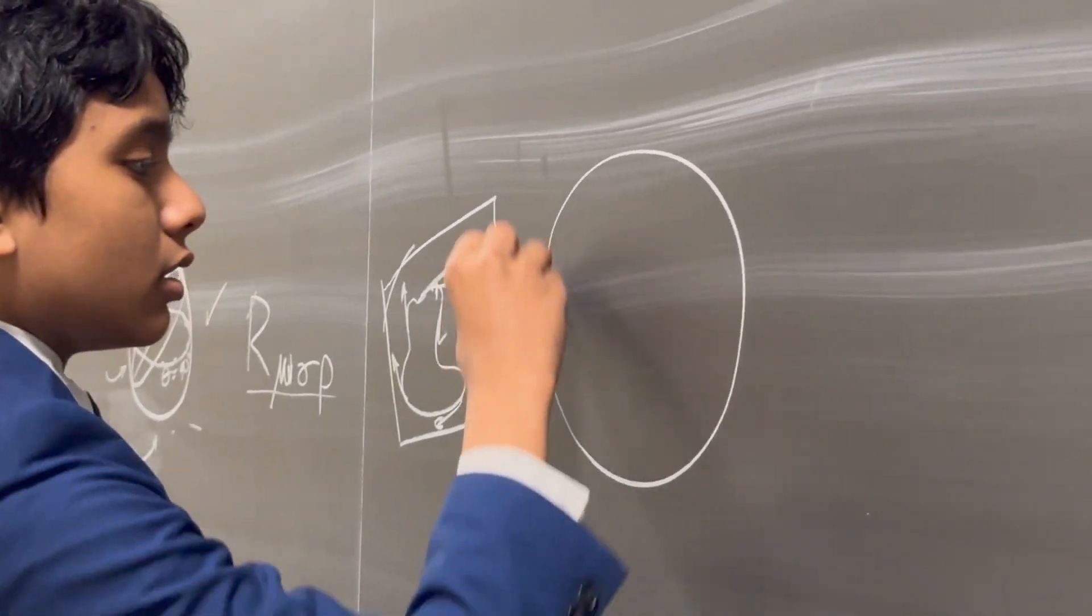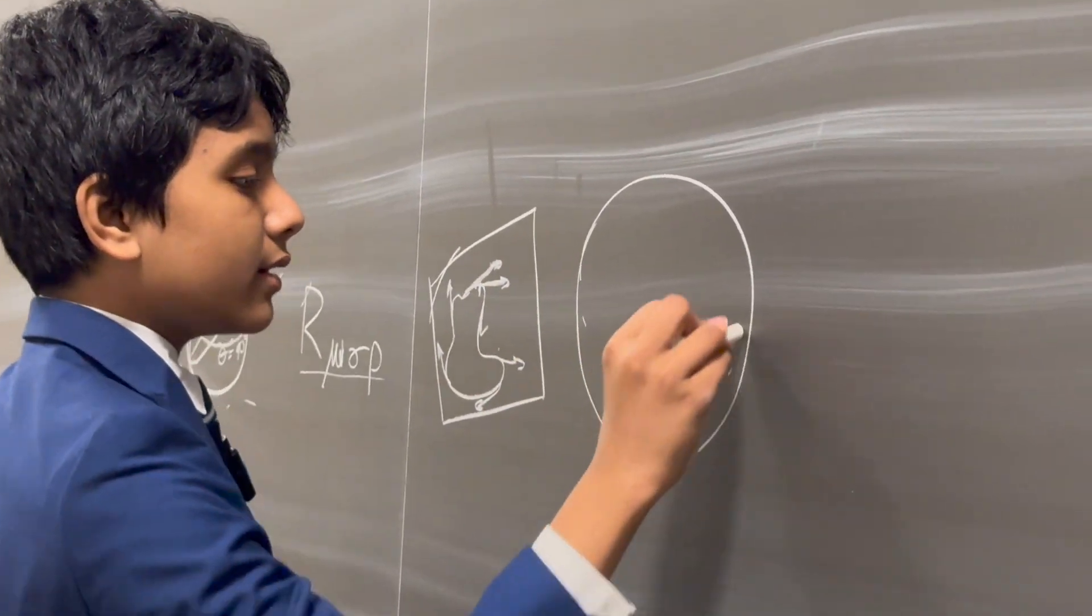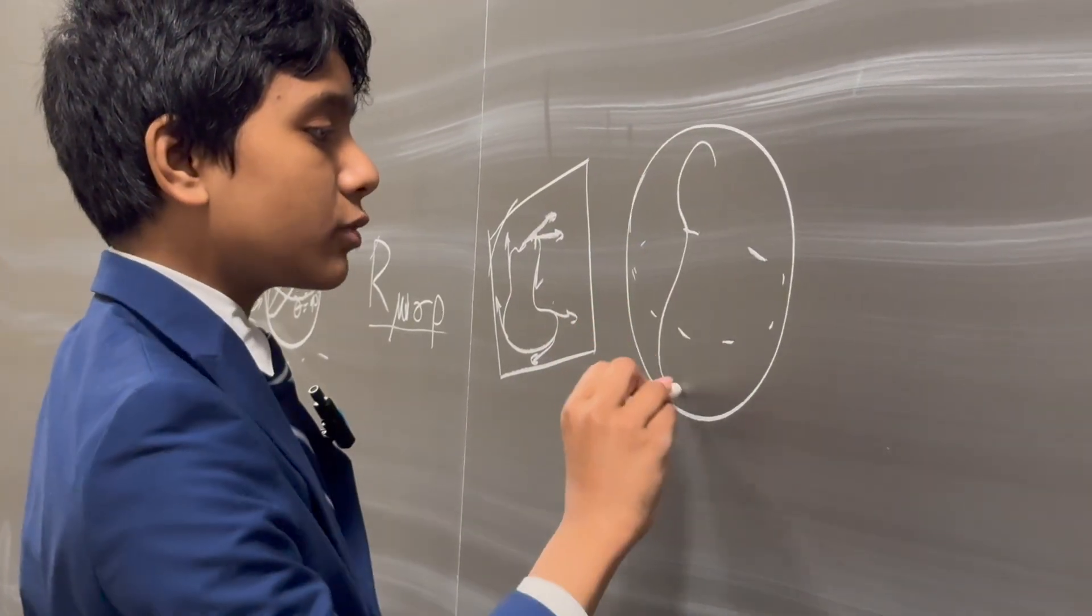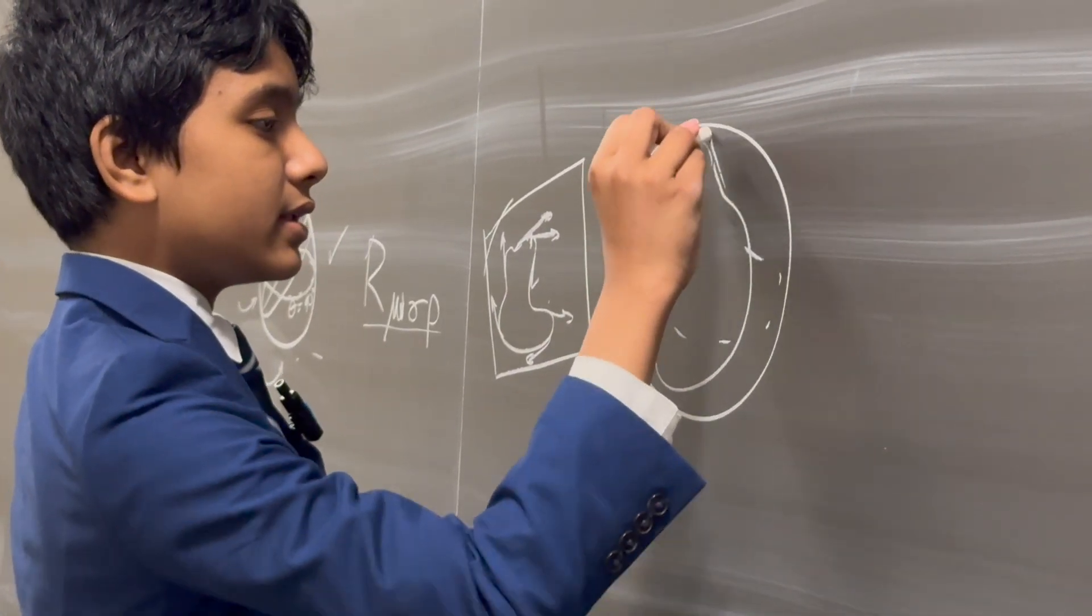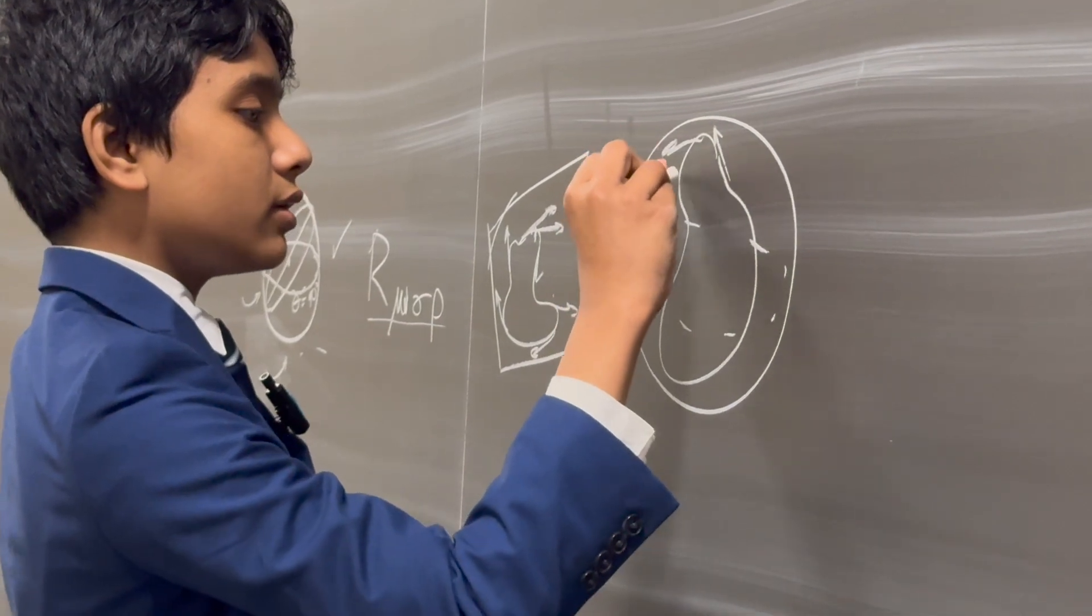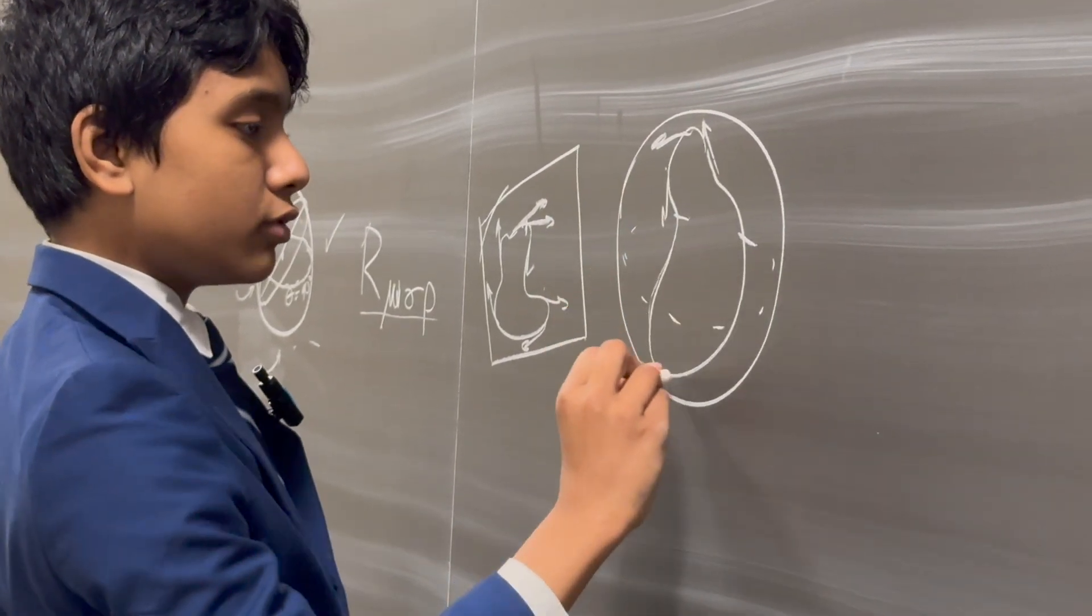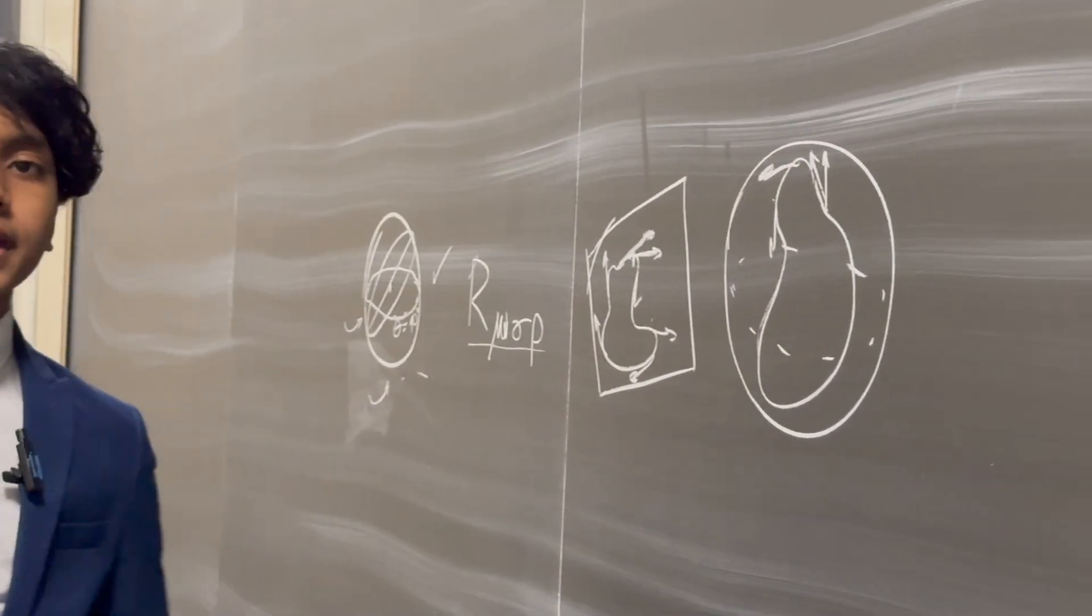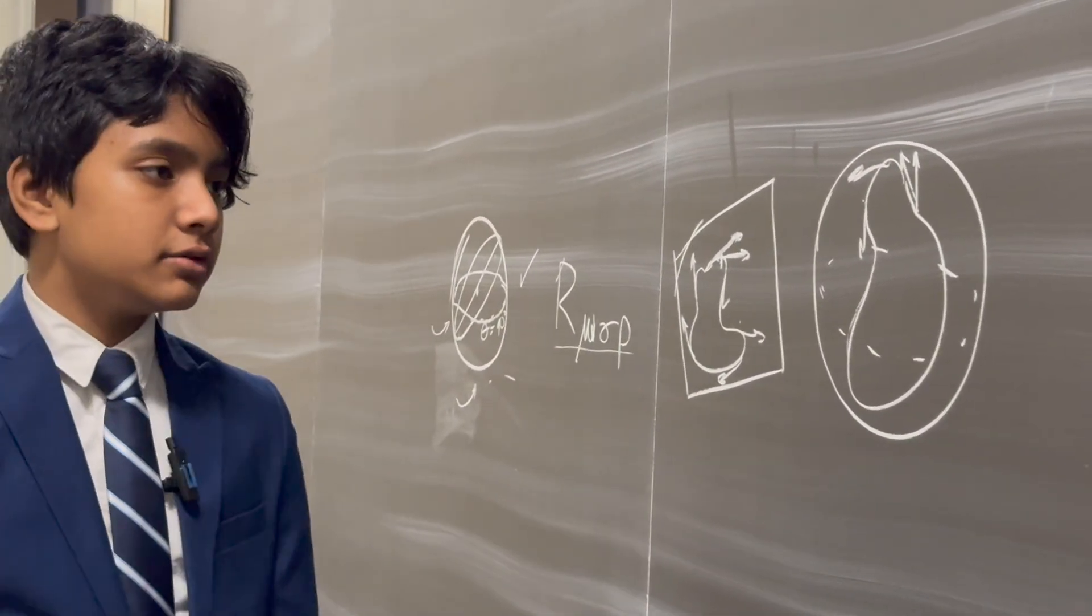But on curved spacetime, that is not the case. So if we draw some curve on it, and then take the tangent vector here, here, and it loops through and through, then there will actually be a slight difference once we get back to the point that we started from.